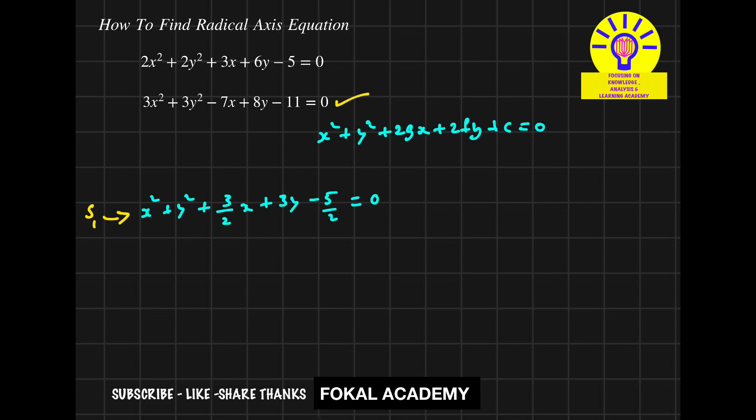In the second equation, the coefficient is 3. Make it 1 by dividing by 3 on both sides. We get x² + y² - (7/3)x + (8/3)y - 11/3 = 0.